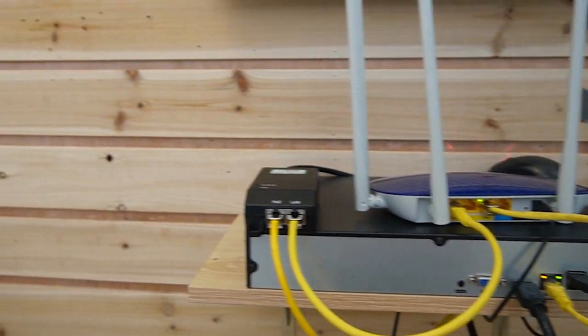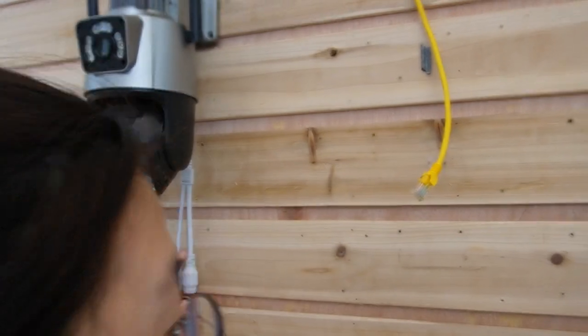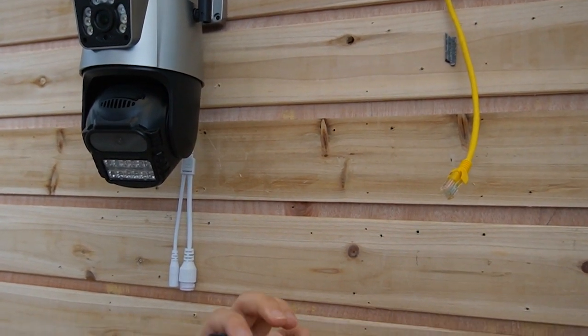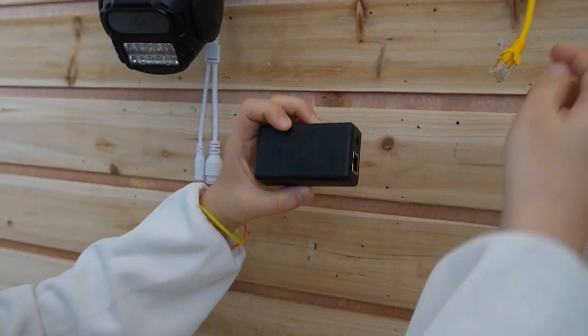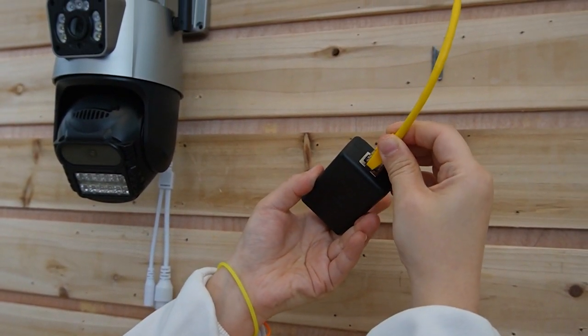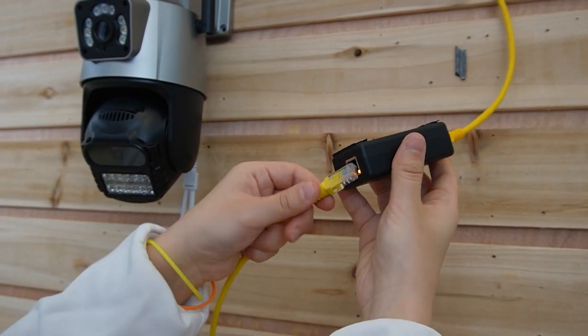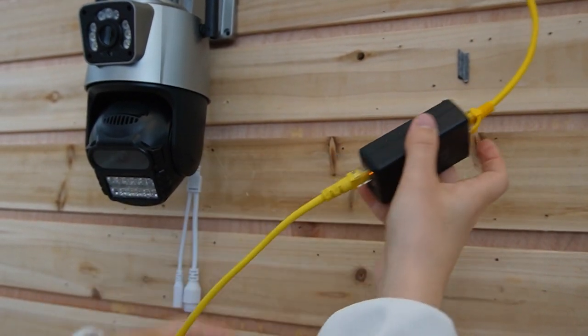And let's move over to the camera side. Okay. And on this side, we need the PoE splitter. And we are going to put in the PoE cable in here. And let's connect to the camera.